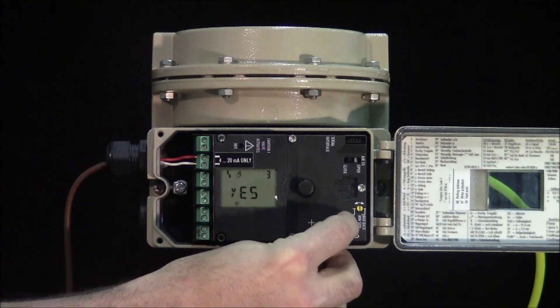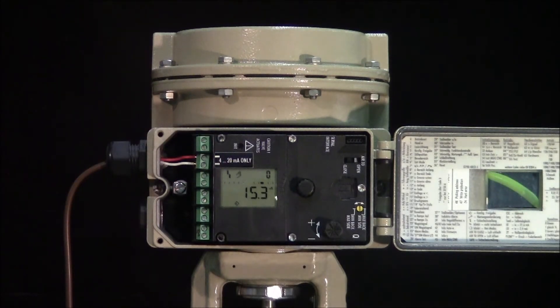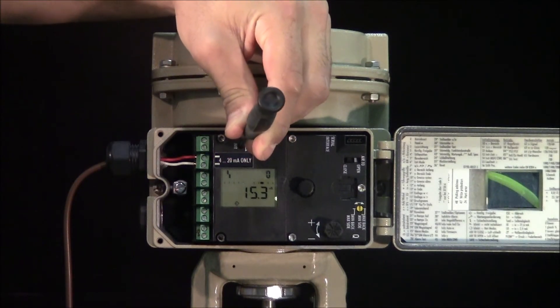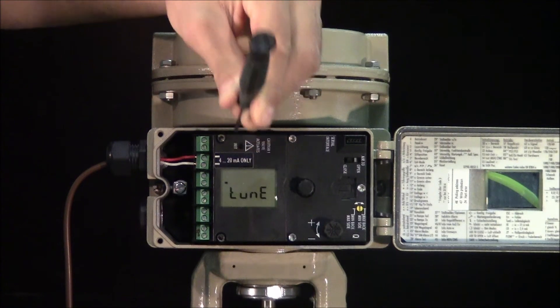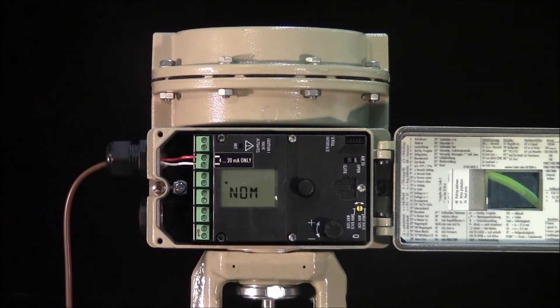We now go back to parameter 0 and press the recessed initialization button to begin the auto-calibration process. This process can take a few minutes while the positioner adapts itself to this specific valve and its operating characteristics. It's important not to disturb or interrupt this process until it's finished.